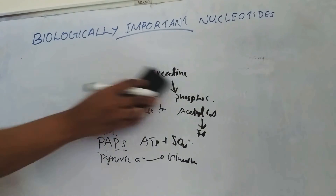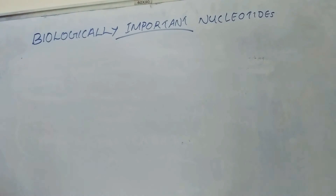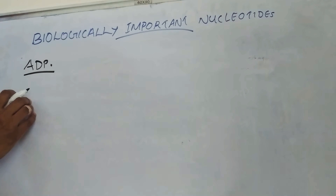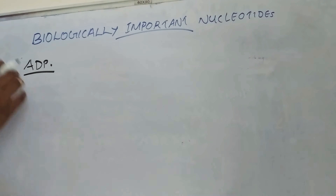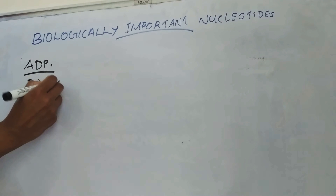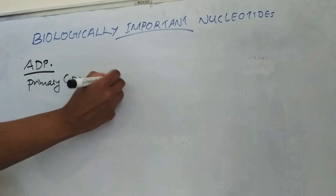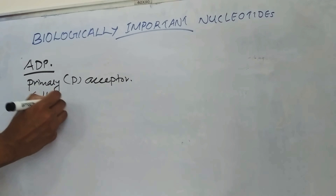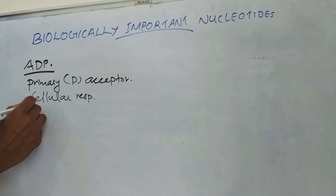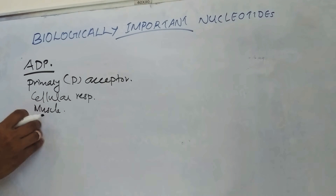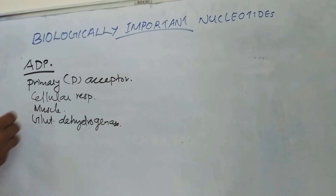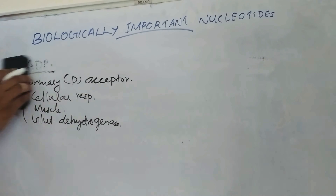Coming to ADP — ADP has a role as a primary phosphate acceptor in oxidative phosphorylation. ADP has an effect on control of cellular respiration and muscle contraction. It is also an activator of the enzyme glutamate dehydrogenase.